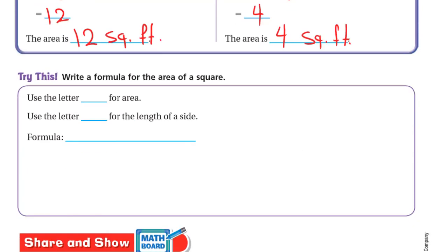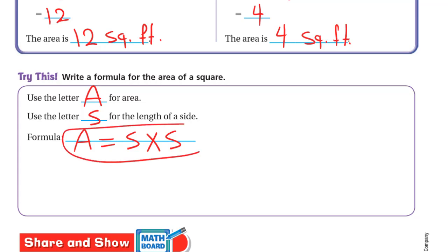For the square, write a formula for the area of a square. We know that a square is actually a rectangle, but all sides are equal. We can also say base times height, but because the base and height are the same, we use the same letter for both. We use A for area and S for the side length. So A equals S times S — the area of a square equals the side length times itself.